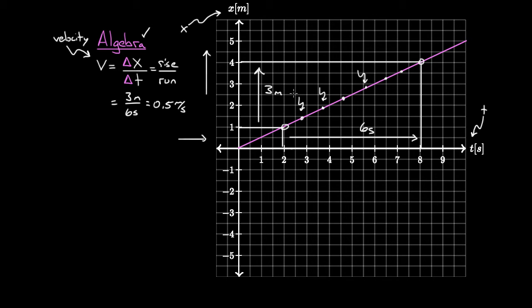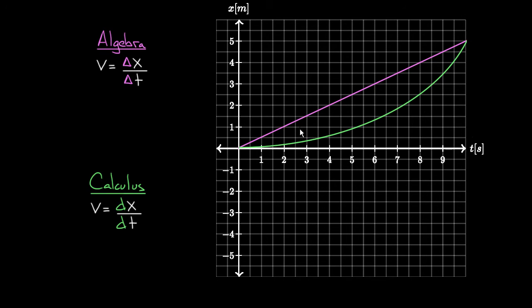In an algebra-based class, you're going to rely on having functions that change at a constant rate. If you've got functions like that, algebra's just fine. But what if you didn't have a function like that? What if you had a function that looked like this, something that was curved? Now this algebra definition isn't going to do so well. Let's say we wanted to find the slope of this green graph. We'd still have to pick two points - this point at one half meter and three and a half seconds, and this point at two and a half meters and eight seconds.